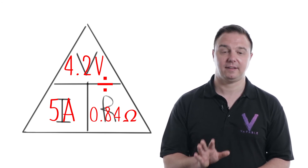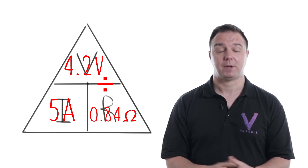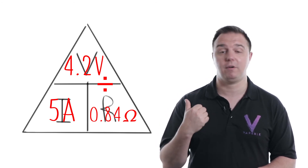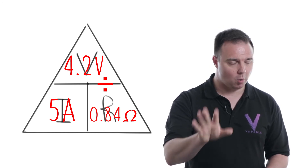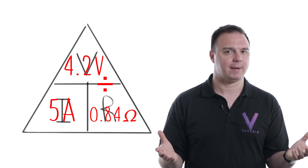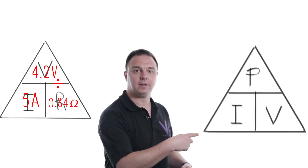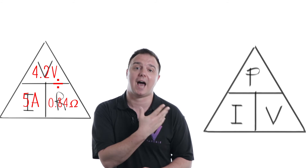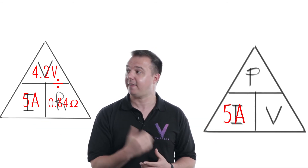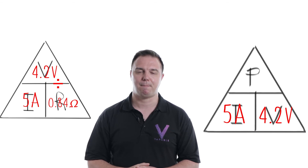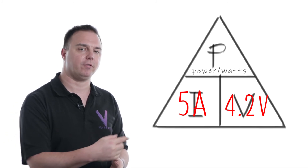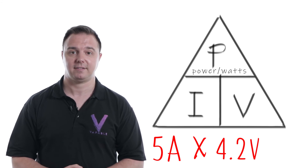I did promise you another triangle — this is the last step. Watt's law. We also have a downloadable calculator that requires you to input just two of the values and it works out the rest for you. Here's that last triangle: P over I-V. I and V are familiar — I is the current or amps, which is 5 amps, and V is the voltage at 4.2. P is Power — the watts or wattage — the value we're looking for to set our mod at. So we multiply the amps by the volts: 5 multiplied by 4.2, which gives us 21 watts.